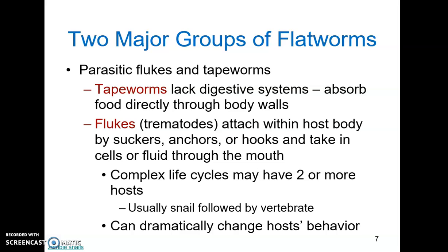The other major group of flatworms is the parasites — the flukes and the tapeworms. These are both highly effective parasites but are structured differently. Tapeworms lack digestive systems completely; they absorb food directly through their body wall. Flukes, or trematodes, attach within the host's body by suckers, anchors, or hooks, and take in cells or fluid through the mouth. Flukes have complex life cycles involving usually two or more hosts — often a snail and then a vertebrate where sexual reproduction occurs.